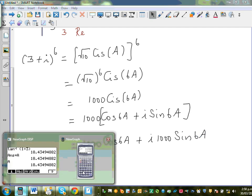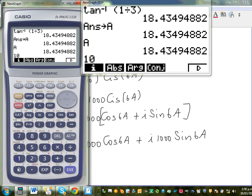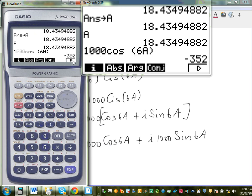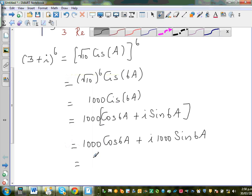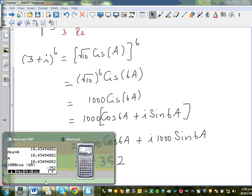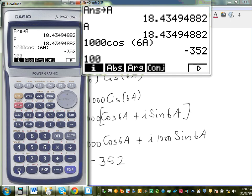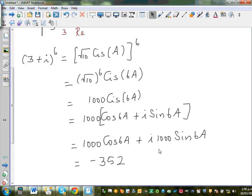So let us again get the calculator. So I'll go 1000 cos. I'll put this in bracket 6A. It will give me the number which is minus 342, which is a neat number minus 352. And for sine, I will go 1000 sine bracket 6A, which is 936i. So the answer is plus 936i. So this is the answer we got by using De Moivre's theorem.